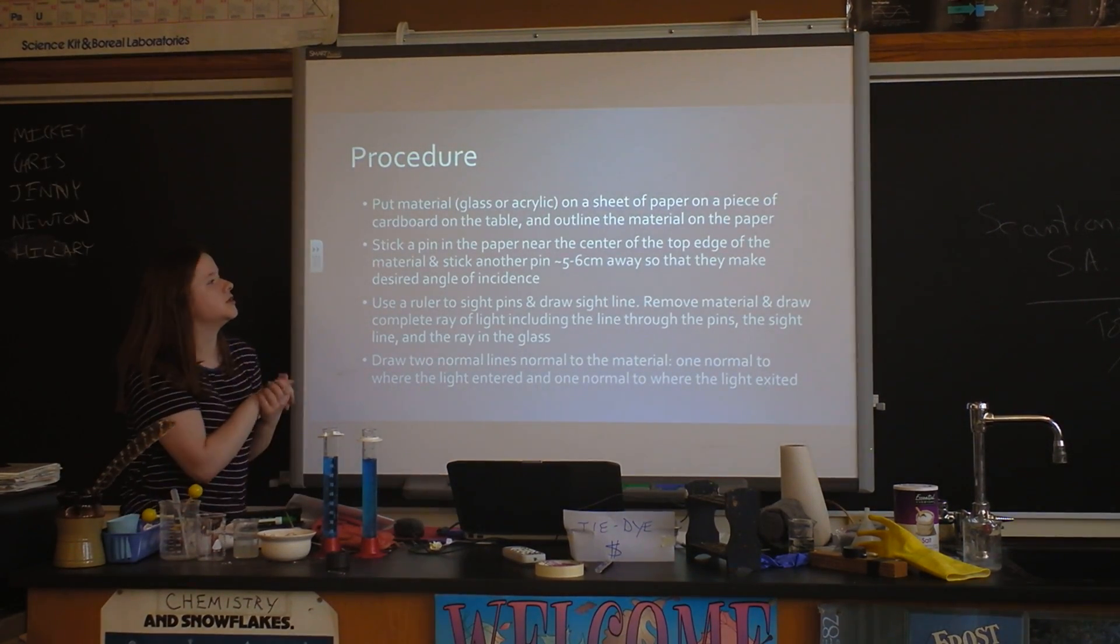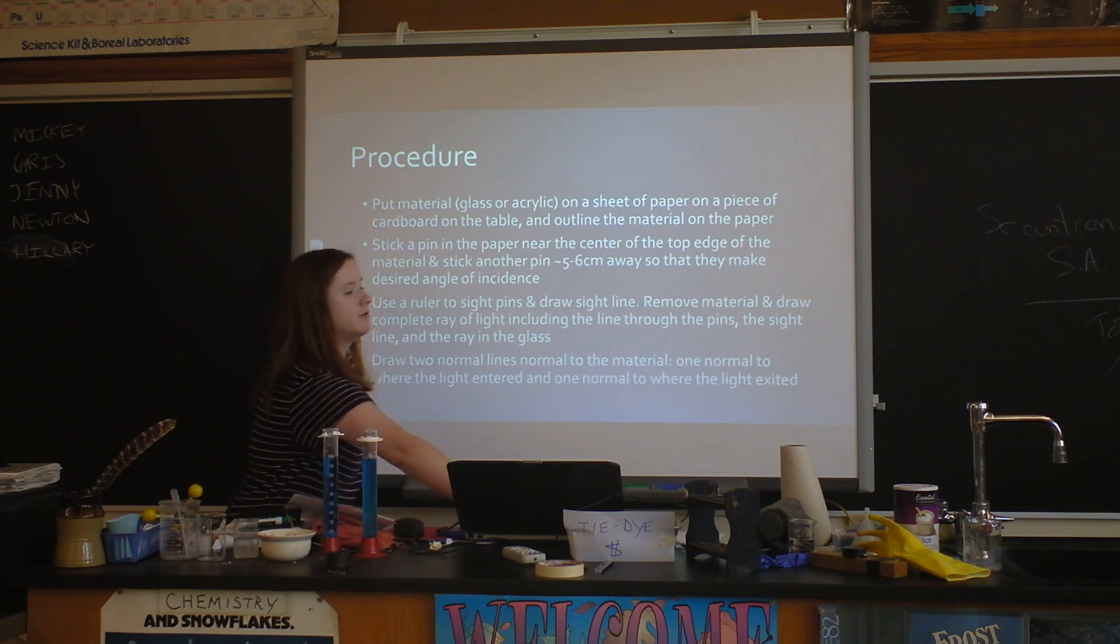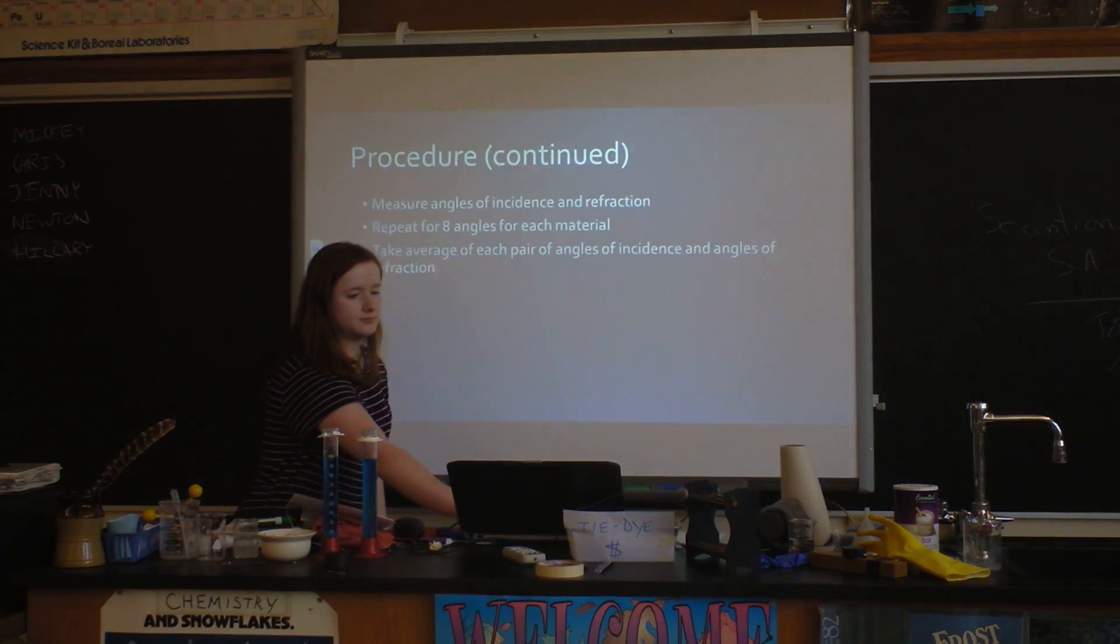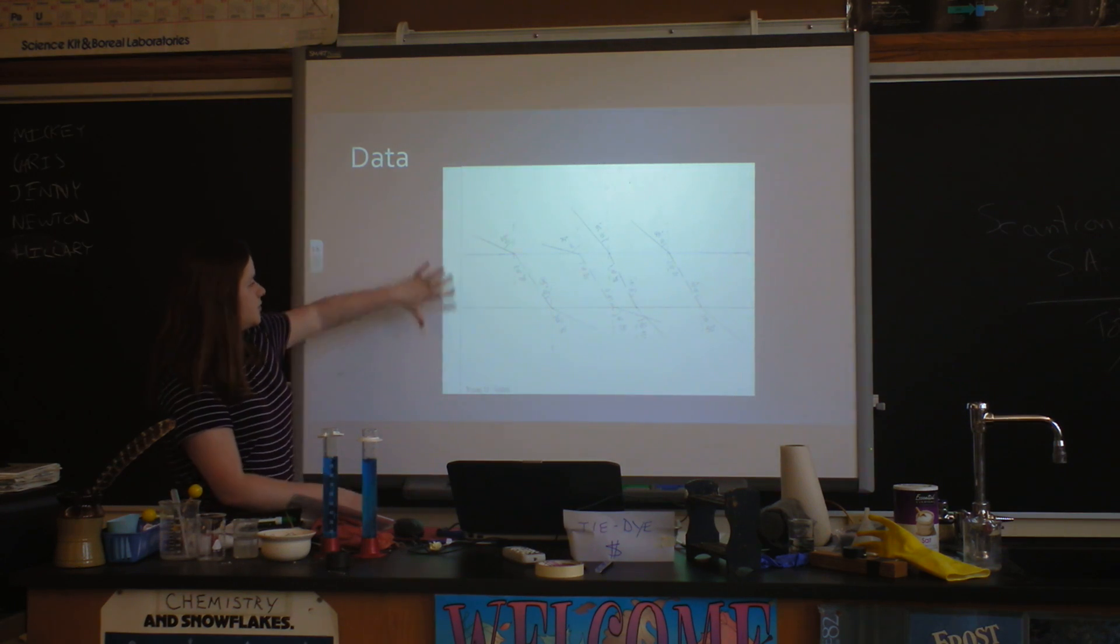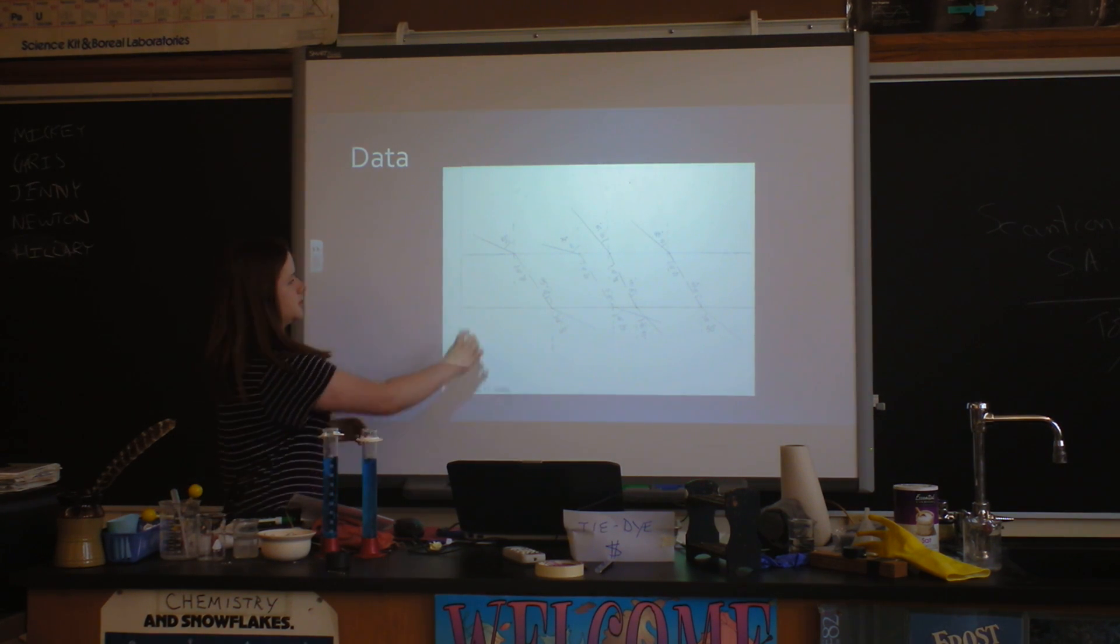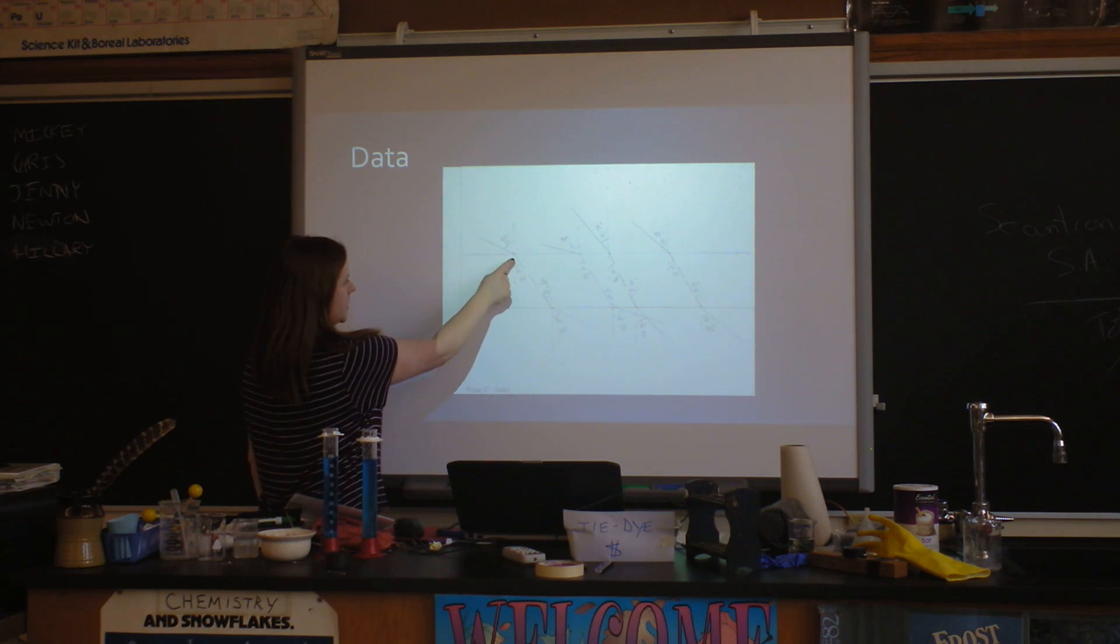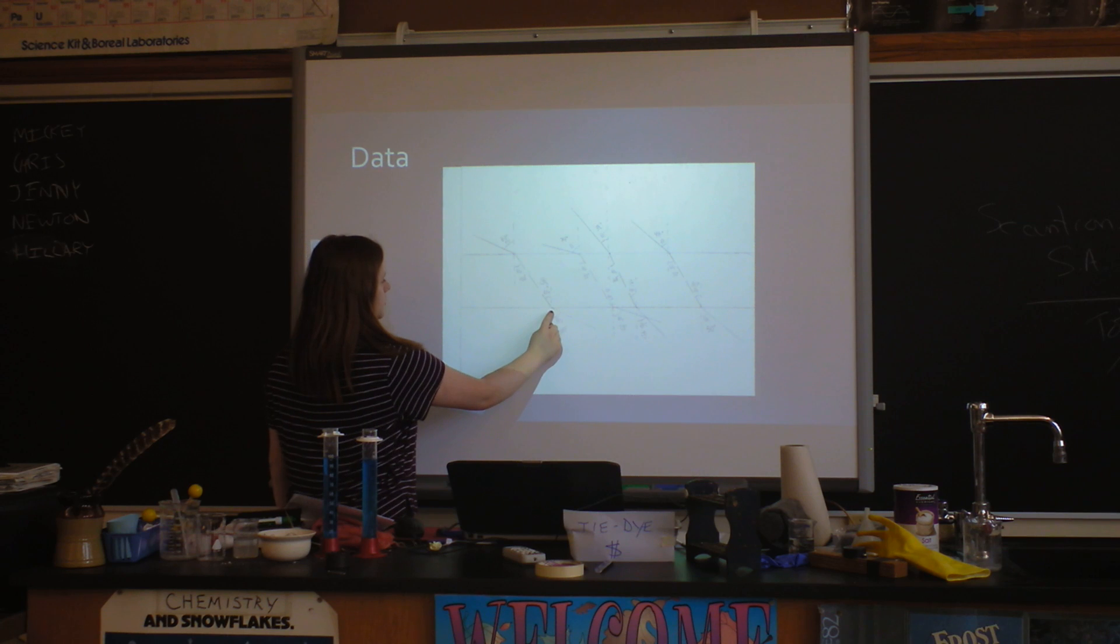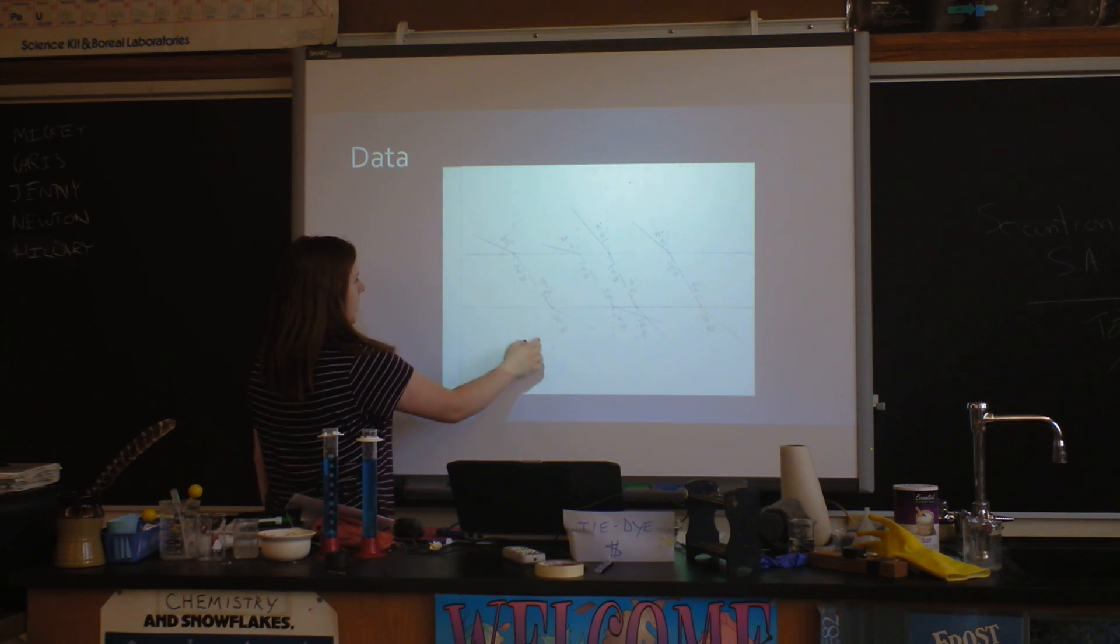We put it on the sheet of paper like I said. So this is an example, this is some of our data for the plate of glass - this is where the glass was on the piece of paper. We had a pin here and a pin here, and then we would come and look and say that it looked like it was coming out there, and that was the sight line to our eye to figure out where that was. So we would measure the angles that it would come in and go out.